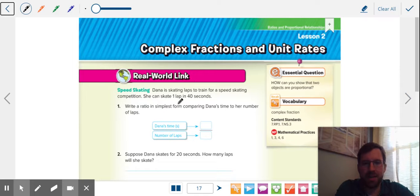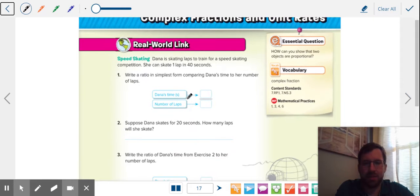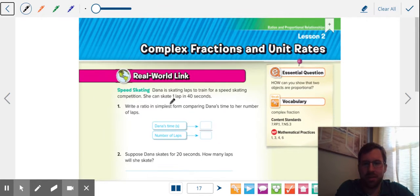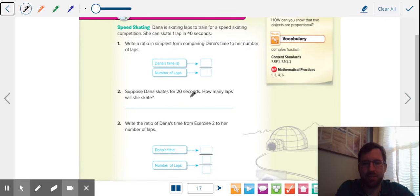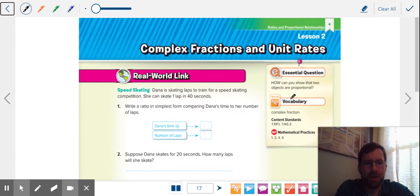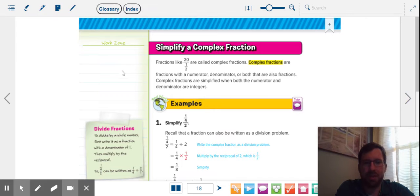So if we're talking about Dana here, this is kind of referencing last lesson. You take her time divided by how many laps. So in this case, she did 40 seconds for one lap. And you get 40 seconds per lap. But anyway, that's not really what we're talking about today.